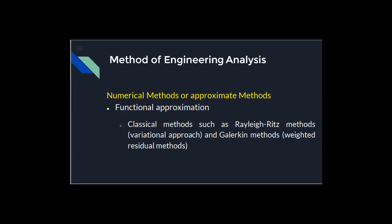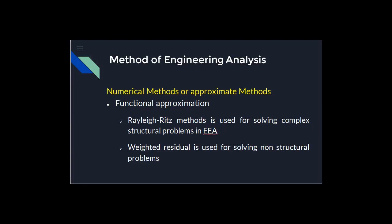The first numerical method is functional approximation. It uses classical methods such as the Rayleigh-Ritz method and Galerkin's method. The Rayleigh-Ritz method uses a variational approach, whereas Galerkin's method uses the weighted residual method. The Rayleigh-Ritz method is specifically used for solving complex structural problems, whereas the residual method is used for solving non-structural problems.